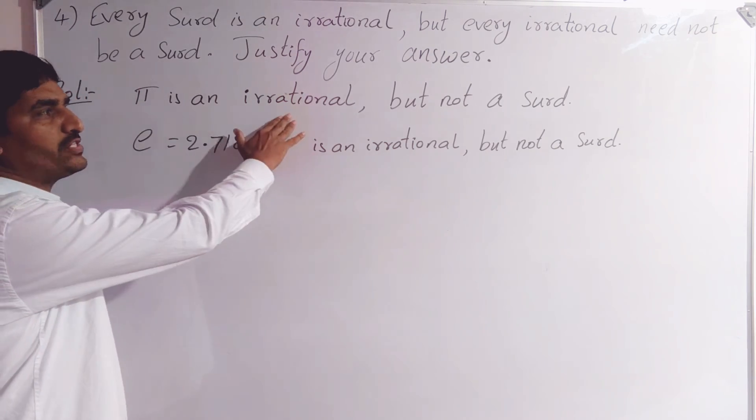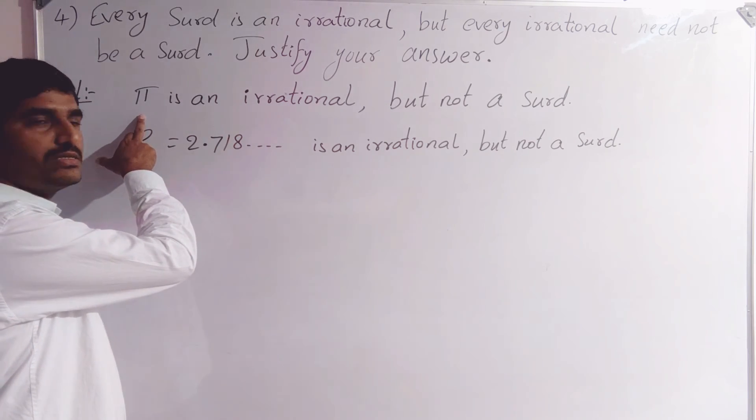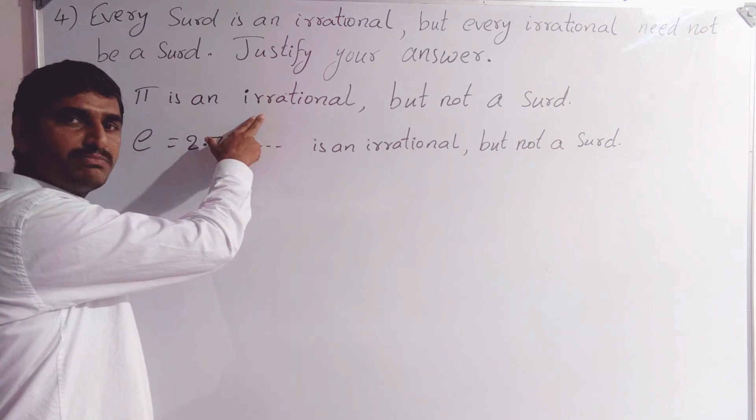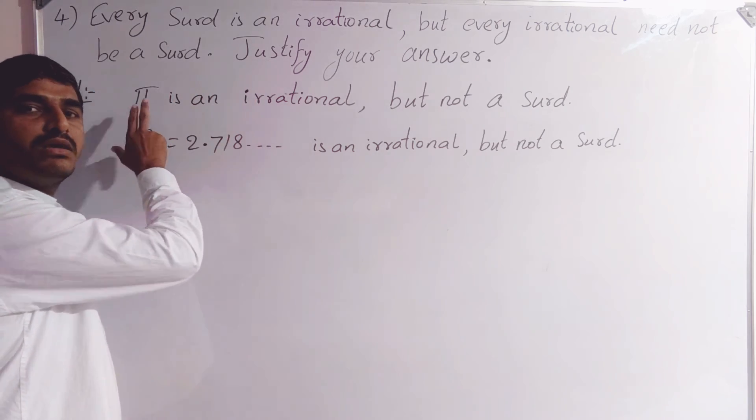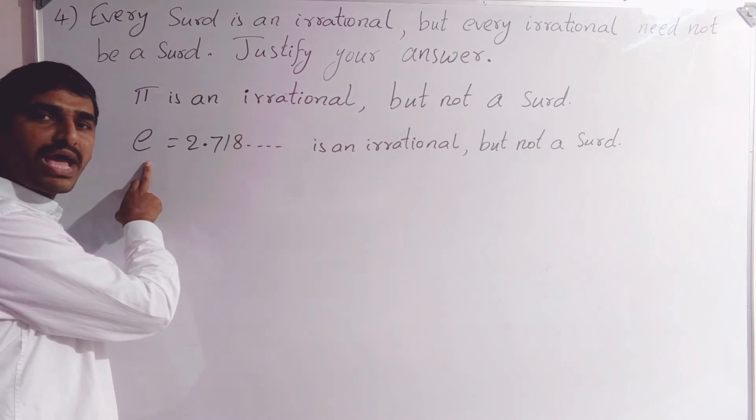Phi is an irrational, but it is not a surd. There is no root for this. Phi is an irrational because its value is a non-terminating and non-recurring decimal. But what about the value of E?